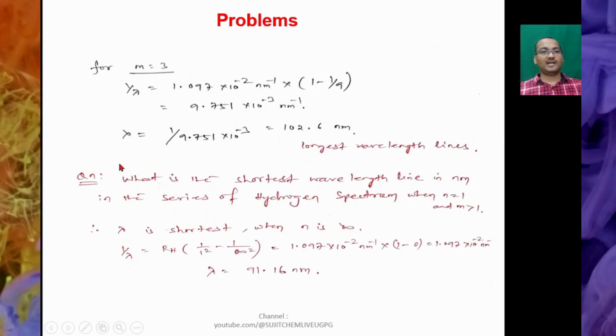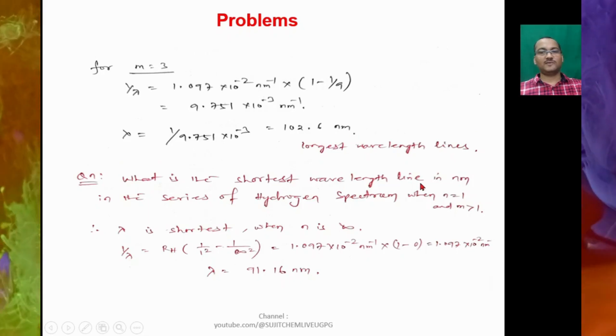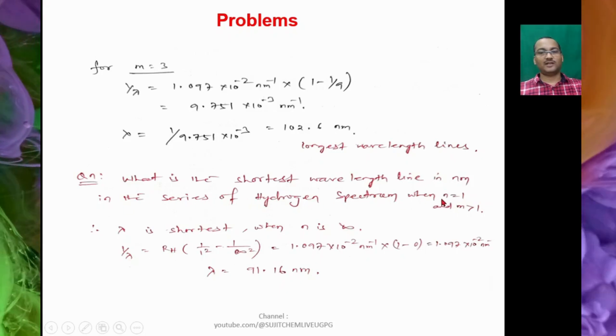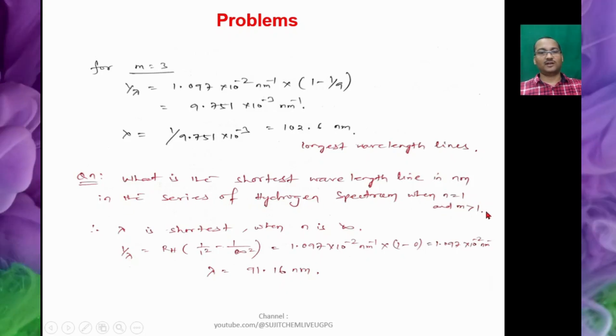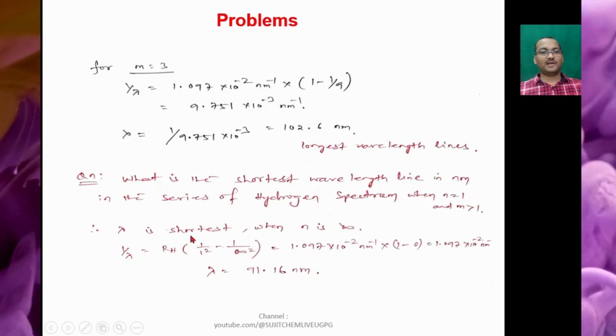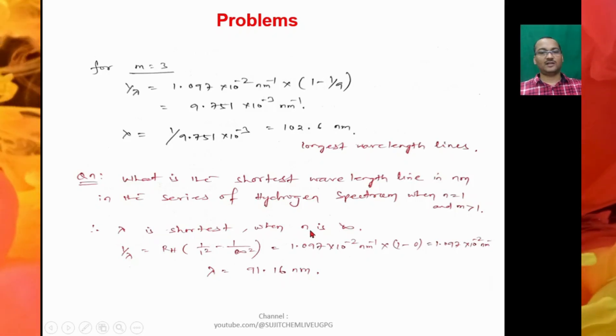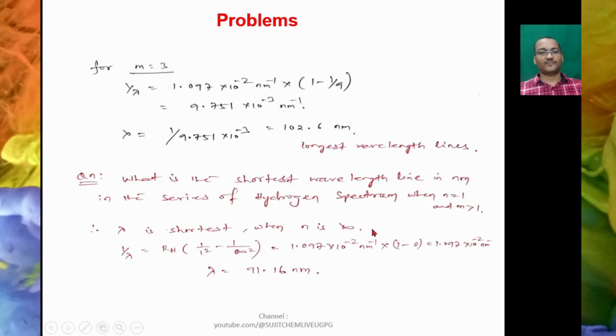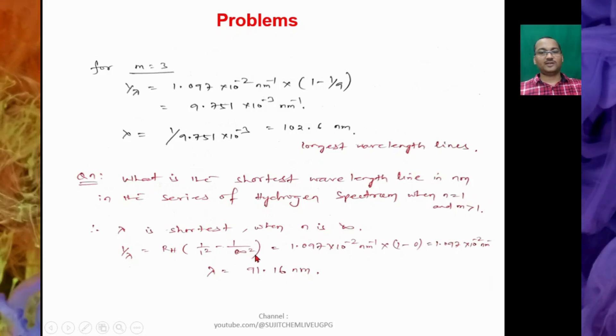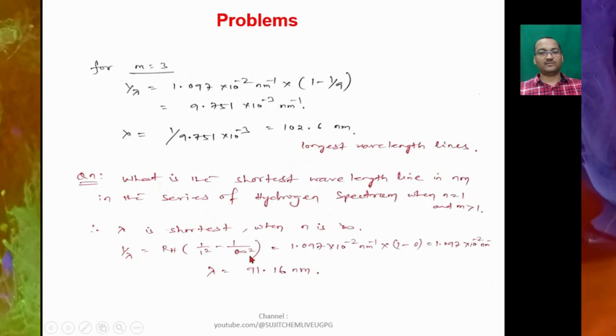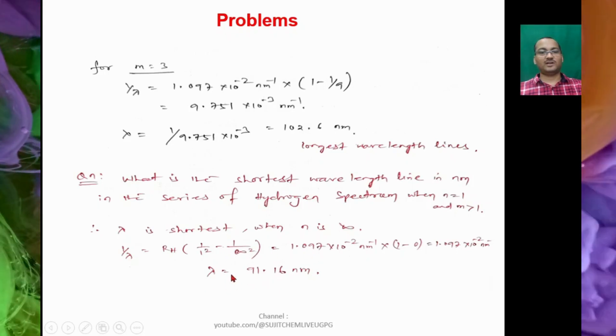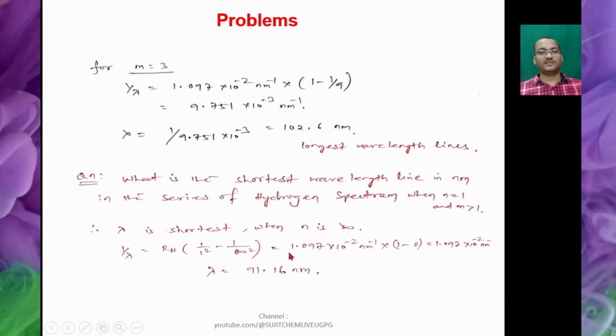Similarly you can try another problem: what is the shortest wavelength line in nanometers in the series of hydrogen spectrum when N = 1 and N greater than 1? So if λ is shortest, then when N is infinity, 1/infinity² equals 0. So here it is found to be λ = 91.16 nanometers.